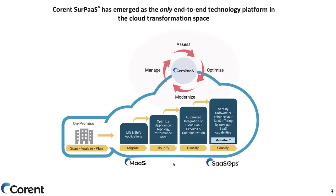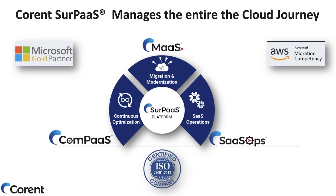We are a Microsoft Gold Partner and we also have the advanced migration competency with AWS. We work very closely with the cloud providers. Our platform is structured into three tool categories: one is Migration and Modernization as a Service (MaaS); the second, which we're looking at today, is Compass for continuous optimization of cloud resources; and finally, SaaS Operations — all available as a service you can offer to your end customers.